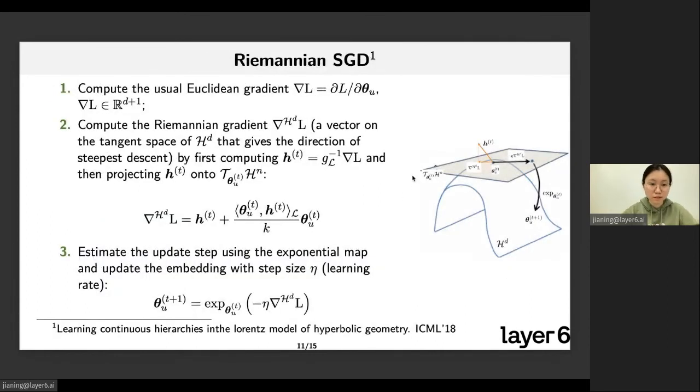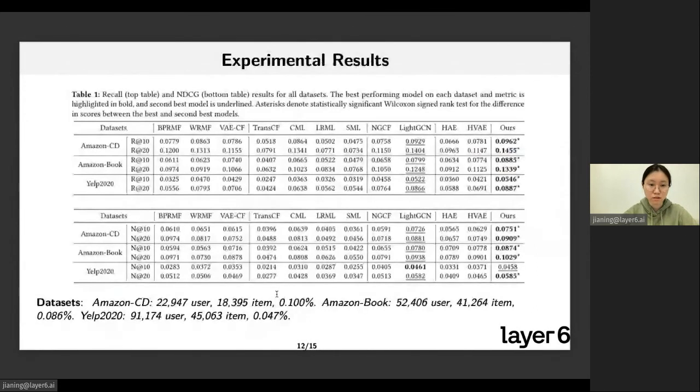For optimizing the embedding parameters defined on hyperbolic space, we use Riemannian stochastic gradient descent, R-SGD, where it first computes the usual Euclidean gradient. Then with the help of the usual Euclidean gradient and the metric tensor g_L, it computes the Riemannian gradients through orthogonal projection as shown in step two and also the figure here. Lastly, exponential map is used to estimate the gradient update on hyperbolic space. That's all about our model.